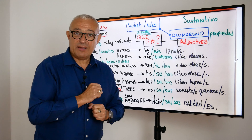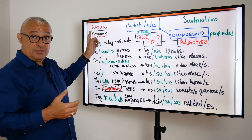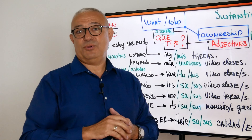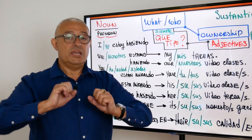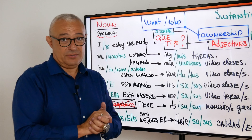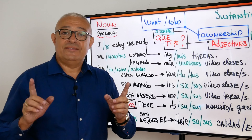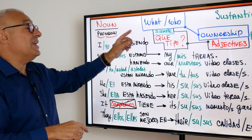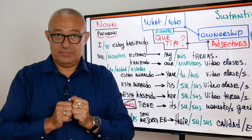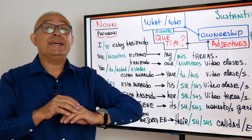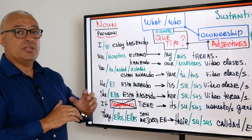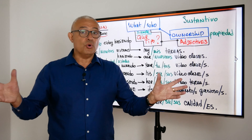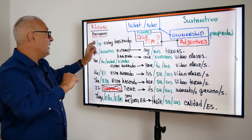El tiempo de aprender inglés de manera antigua se acaba. No seas un loro. Aprende a pensar en inglés. En videos anteriores, nosotros hablamos qué tenemos que hacer para pensar como nativo. Para entender cómo inglés funciona y así podemos ser capos al principio. Para no ser loro, nosotros tenemos que entender que inglés no tiene traducciones, inglés tiene funciones. Y nosotros empezamos de hablar al principio de los sustantivos o nouns, que son cosas que hacen respuestas para la pregunta what y who. Nosotros vamos a seguir hablando de esa cosa.